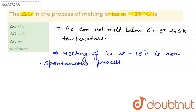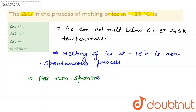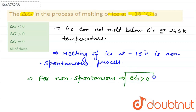Now, for a non-spontaneous process, delta G is always positive, which means greater than zero.